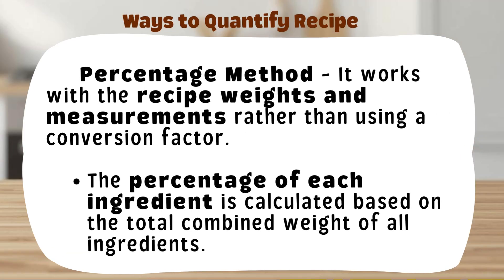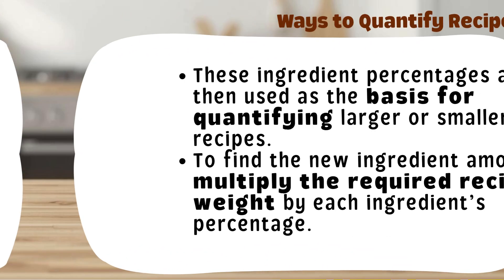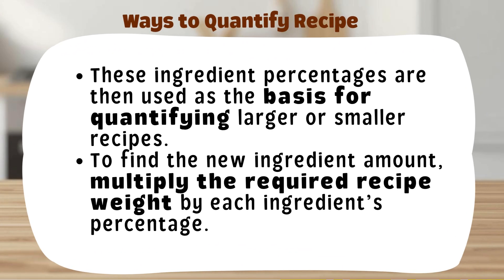The percentage method helps standardize recipes. Instead of guessing or using a conversion factor, you calculate each ingredient's share — percentage — of the total recipe, then multiply that percentage by the total weight you want to produce. It's accurate, flexible, and ideal for scaling recipes up or down, especially in food production and commercial kitchens. The percentage of each ingredient is calculated based on the total combined weight of all ingredients. These ingredient percentages are then used as the basis for quantifying larger or smaller recipes. To find the new ingredient amount, multiply the required recipe weight by each ingredient's percentage.